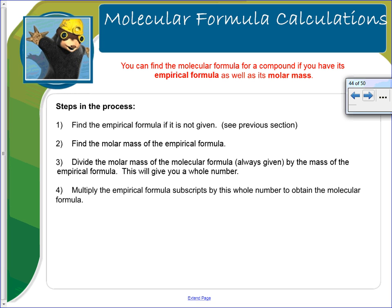To find the molecular formula, you need the empirical formula and the molar mass of the compound. Find the empirical formula first if it's not given. They'll always give you the molar mass of the molecular formula; you calculate the molar mass of the empirical formula. Divide the molecular molar mass by the empirical molar mass to get a whole number, then multiply all empirical subscripts by that number.